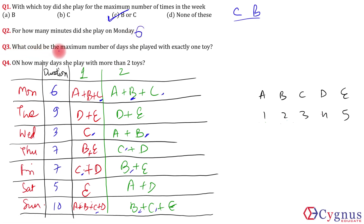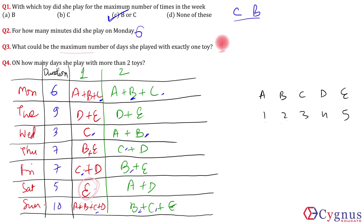Question 3: what is the maximum number of days she played with exactly one toy? In Case 1, she plays with exactly one toy on zero days. In Case 2, she plays with exactly one toy on one day — Saturday (toy E only). The maximum across both cases is 1.